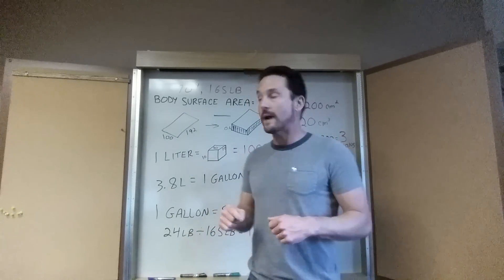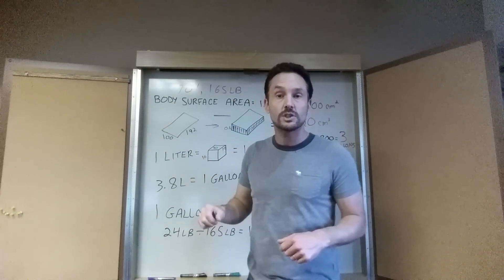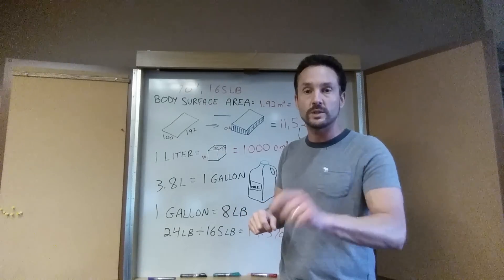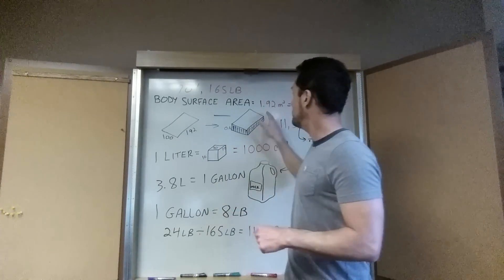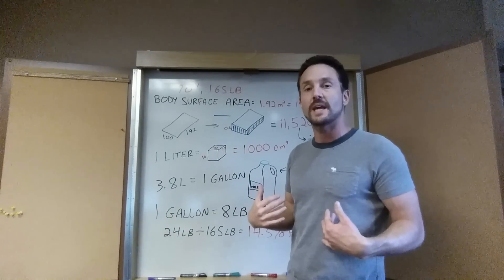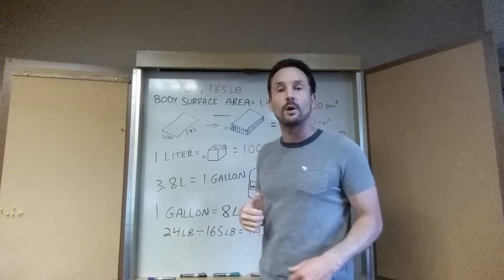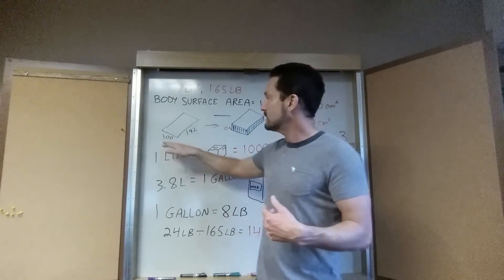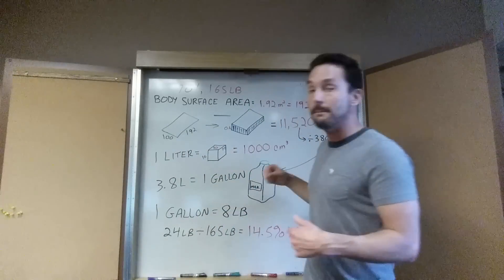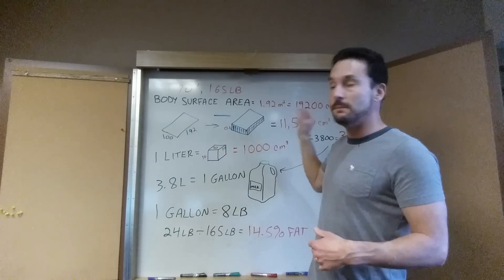So what I did was we started with body surface area and I just plugged in my height 70 inches and my weight 165 pounds to the calculator which I put a link below and it told me I have 1.92 meters squared, that's my body surface area. That's 1 meter by 1.92 meters or a large beach towel of surface area, it's 100 centimeters by 192 centimeters, so my body surface area is 19,200 centimeters squared.